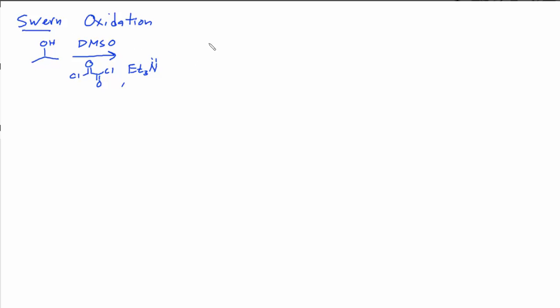The Swern oxidation is another mild form of oxidation that has gentle basic conditions instead of the strongly acidic conditions of the H2CrO4 reaction. So in this case, we would get the expected product, a ketone, from our secondary alcohol.